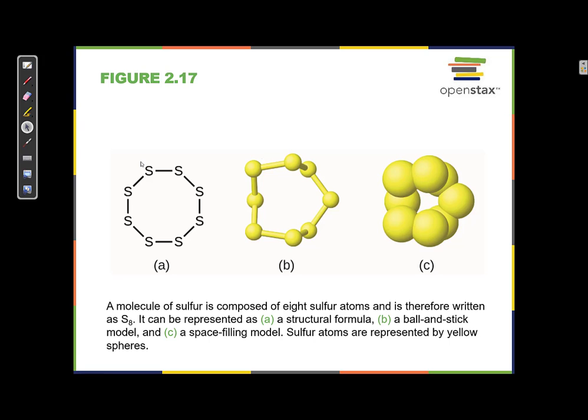Here are a couple of representations of sulfur. Representation A shows the eight sulfur atoms bonded to each other in a ring, but it looks like a flat ring. In representation B, you can see that the ring is not really flat — it has some three-dimensional shape, and it looks much less like an octagon when you look at it that way. In representation C, you can see the spheres actually overlapping each other, which is probably the most realistic representation. Pure sulfur comes in these molecules of S8.